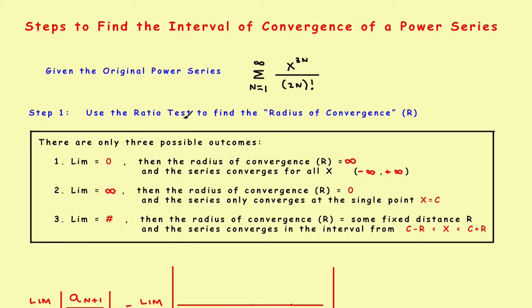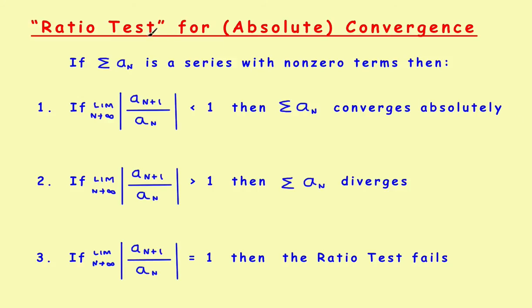The ratio test will be the dominant test to find what's called the radius of convergence, which will give you the interval in which you can find x's that the series will converge in. So you're going to need to use the ratio test. Before we go on, let's do a quick review of what the ratio test looks like. I'm assuming you've already used the ratio test and are familiar with it — if not, you might want to watch those videos first.